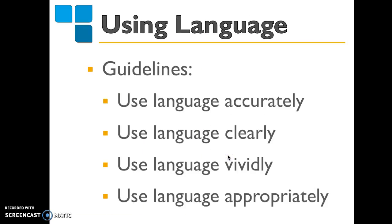Public speakers need to use language accurately. Using language accurately is as vital to the speaker as using numbers accurately is to an accountant. Speakers who have serious aspirations should develop a systematic plan for improving their vocabulary. Public speakers also need to use language clearly. Because listeners cannot turn to a dictionary or reread a speaker's words, a speaker's meaning must be immediately comprehensible. Ways to ensure clarity include using familiar words, using concrete words, and eliminating linguistic clutter. Public speakers also need to use language vividly and appropriately.